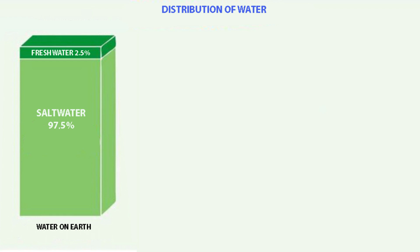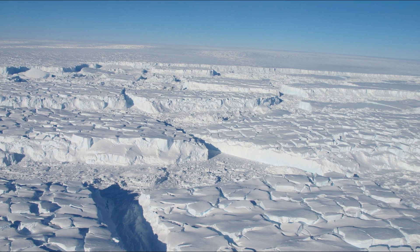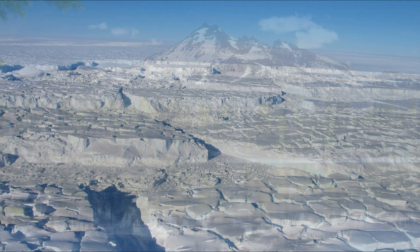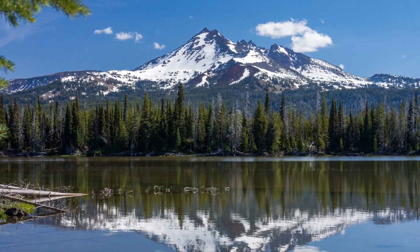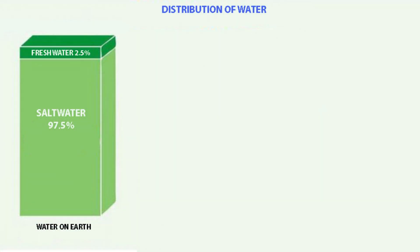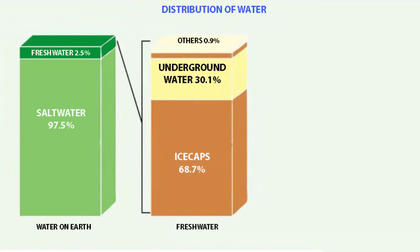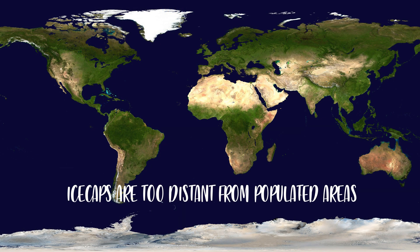But not all of the freshwater is accessible to us, as freshwater is distributed amongst polar ice caps, rivers, lakes, and also the atmosphere. Of this 2.5%, a full 68.7% is actually in a solid state found in the polar ice caps or glaciers. What that means is that most of humanity doesn't really have access to it. If you live in a country like Spain, Nigeria, or even Australia, you won't be able to drink that water.